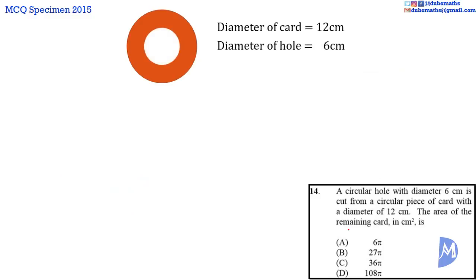There is a circular piece of card with diameter 12 centimeters. A circular hole is cut from it. This hole has a diameter of 6 centimeters. The remaining card is what we are asked to find the area of. To do this, we find the area of the card and subtract from it the area of the hole.